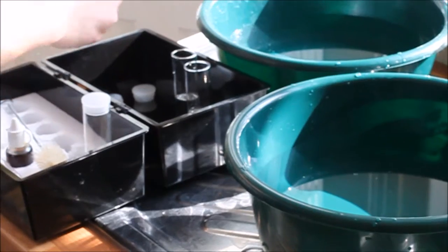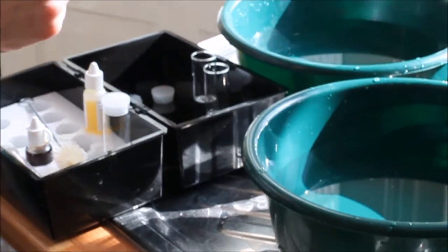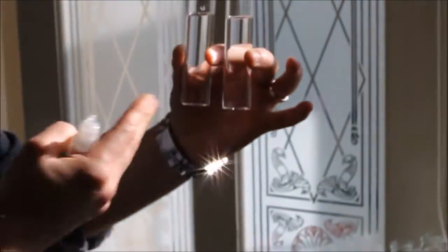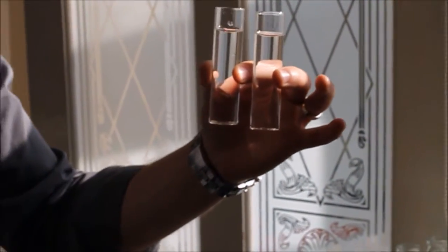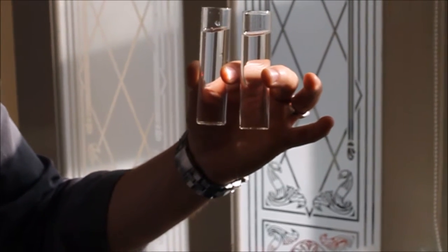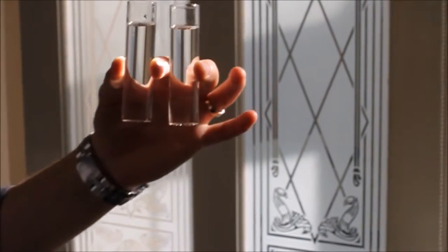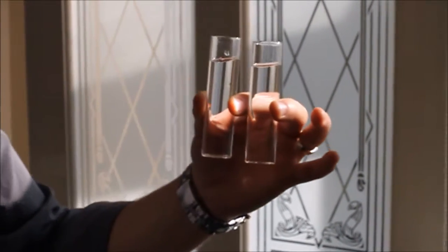So the first test that I'm going to do for you is what we call a precipitation test. Now what this is designed to do, rather than sit here and wait for these two to evaporate and see what's left behind, we can do it with a couple of chemicals very quickly to show you how much hardness is in the water. So we'll see how much is in the hard water and how much is in the soft water.